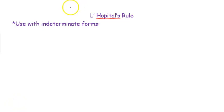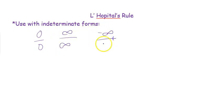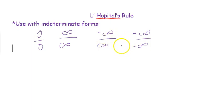I wanted to review L'Hôpital's rule with you. You can use it with indeterminate forms when you are solving limits. Indeterminate forms are like 0 over 0, infinity over infinity, negative infinity over infinity, negative infinity over negative infinity, and so on. When you're getting things like that while plugging in to try to do limits, this is when you want to use L'Hôpital's rule.